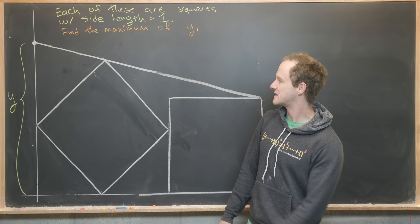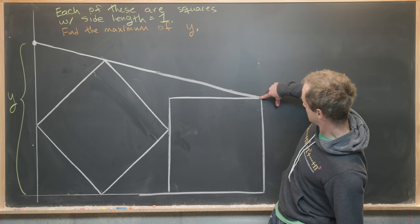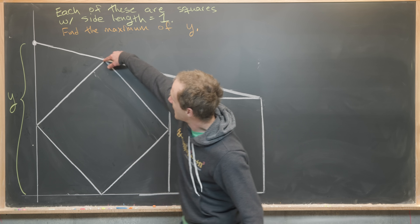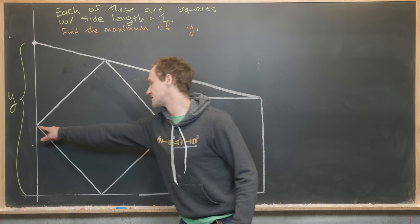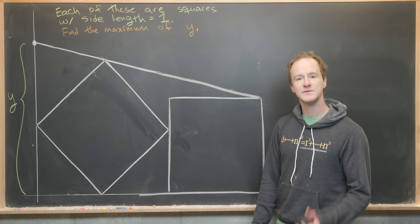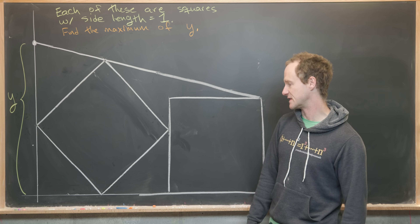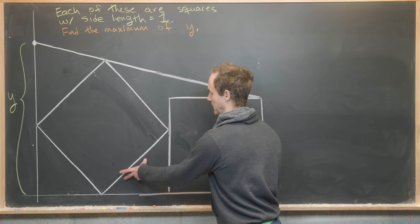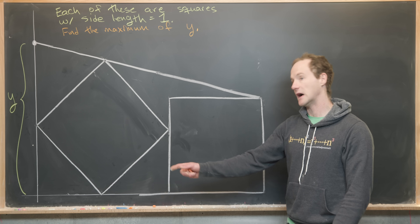This y is constructed by finding the line from this vertex of the square to this vertex of the other square, and then finding the intersection with this vertical line, which intersects the leftmost vertex of the tilted square. Notice that the minimum value of y is obviously one, and we get that by rotating the square until its bottom side is in line with the lower line.